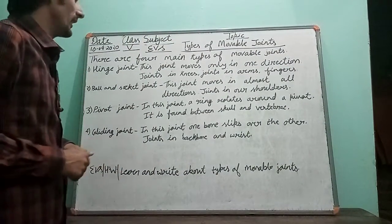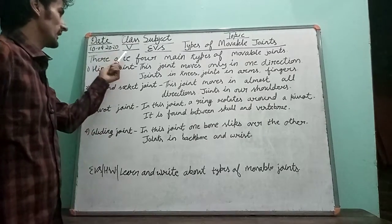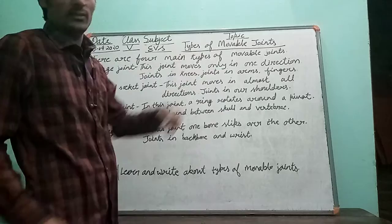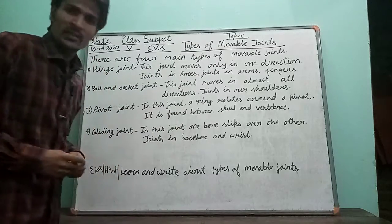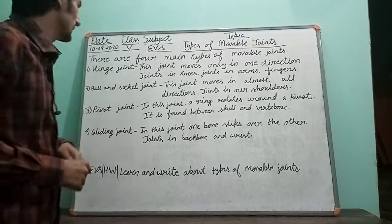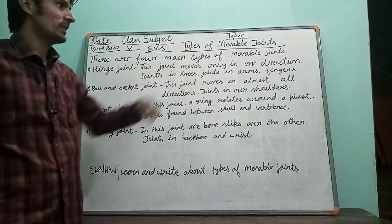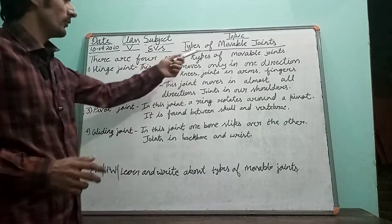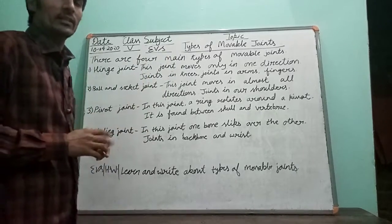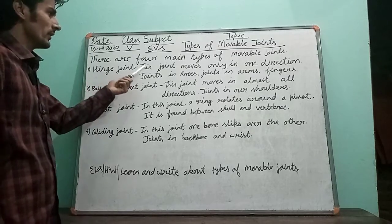Hello students, I am back to move forward. This is class 5 subject. Our previous topic was types of mobile joints. Today we are going to talk about the types of mobile joints. There are four main types of mobile joints present in our body.